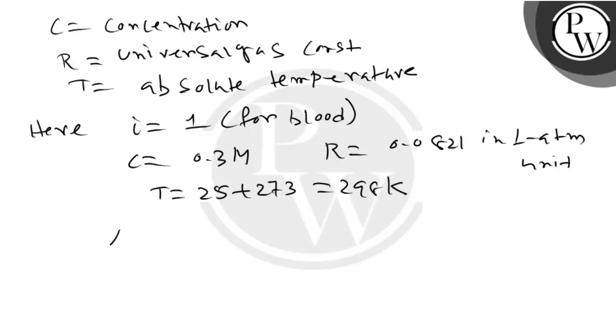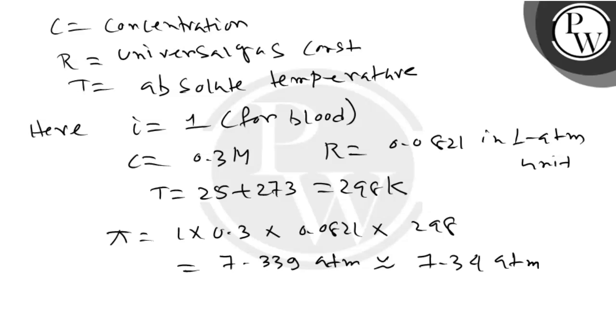Now putting all the values, pi equals 1 into 0.3 into 0.0821 into 298. So that will be on calculation 7.339 atm, which is approximately 7.34 atm.